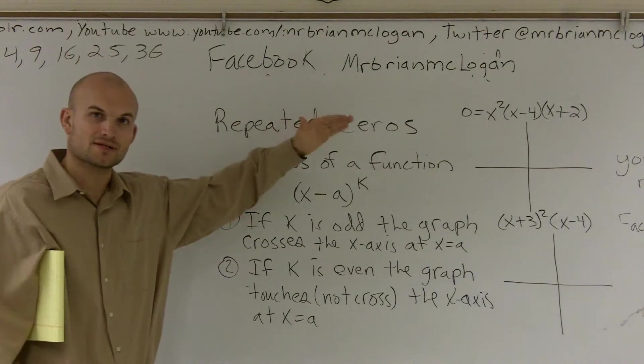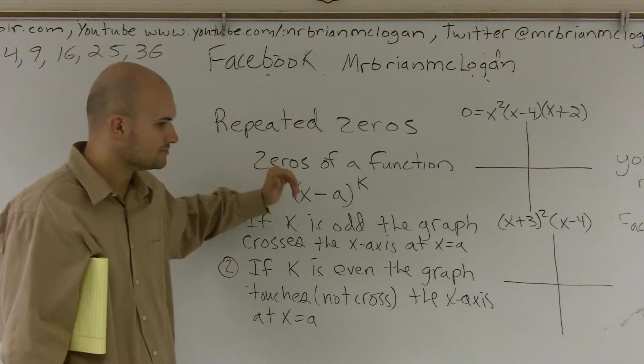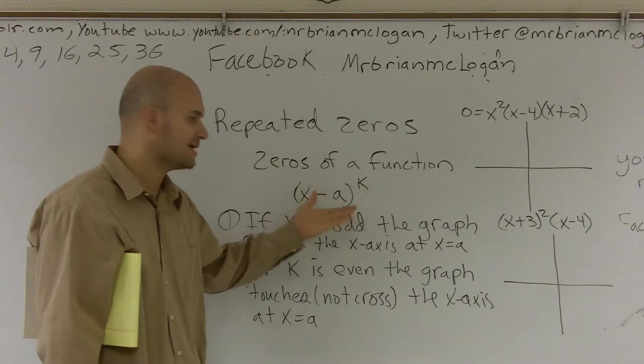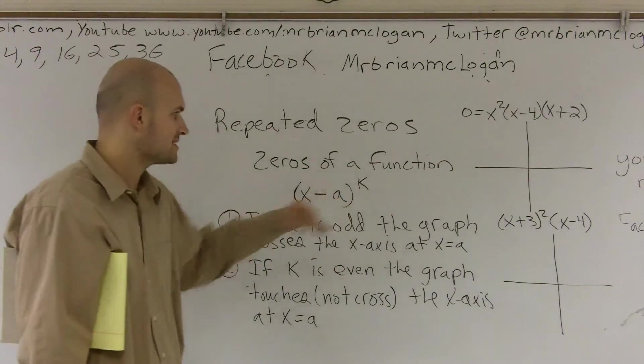So we talked about polynomials and we talked about zeros. And one way we talked about when we're given the zeros, we can write it as a factor of x minus a. So if a was our zero, we can write it as x minus a.